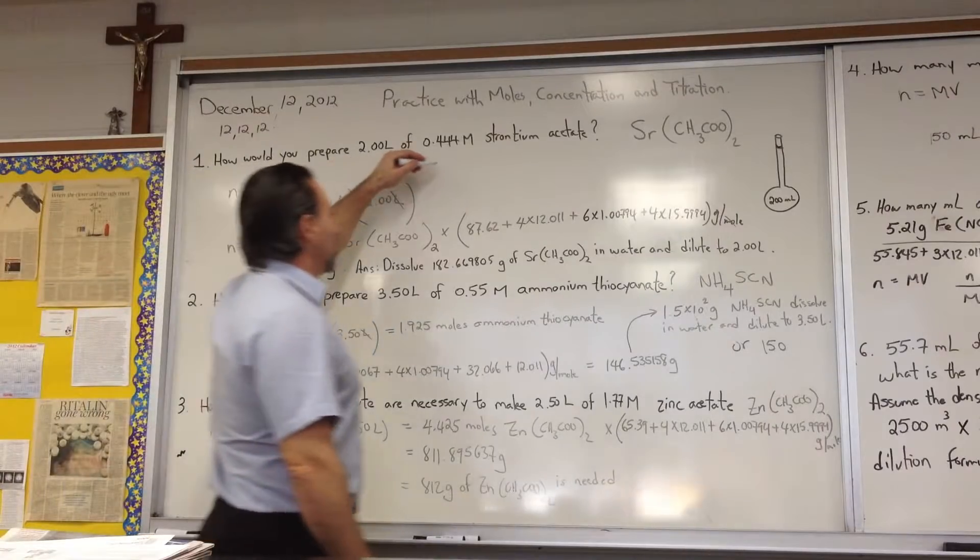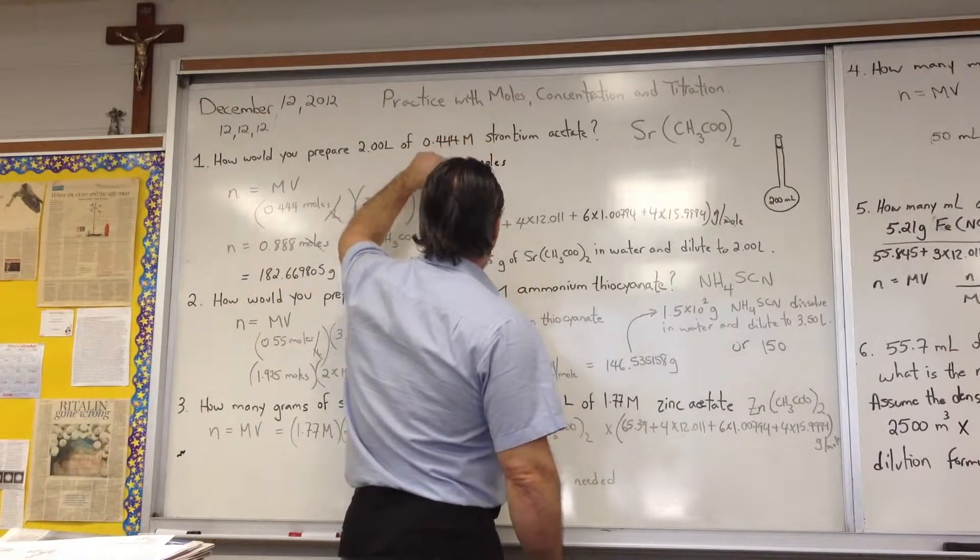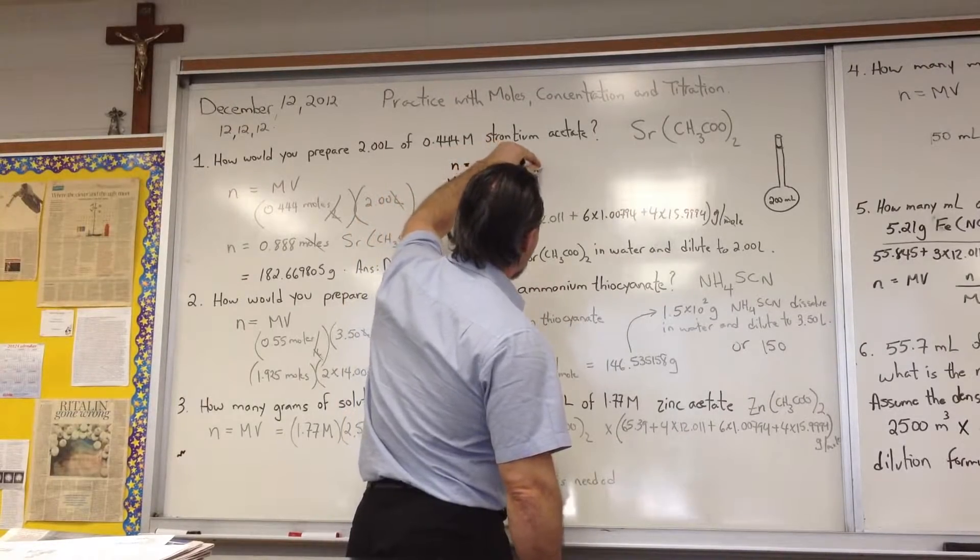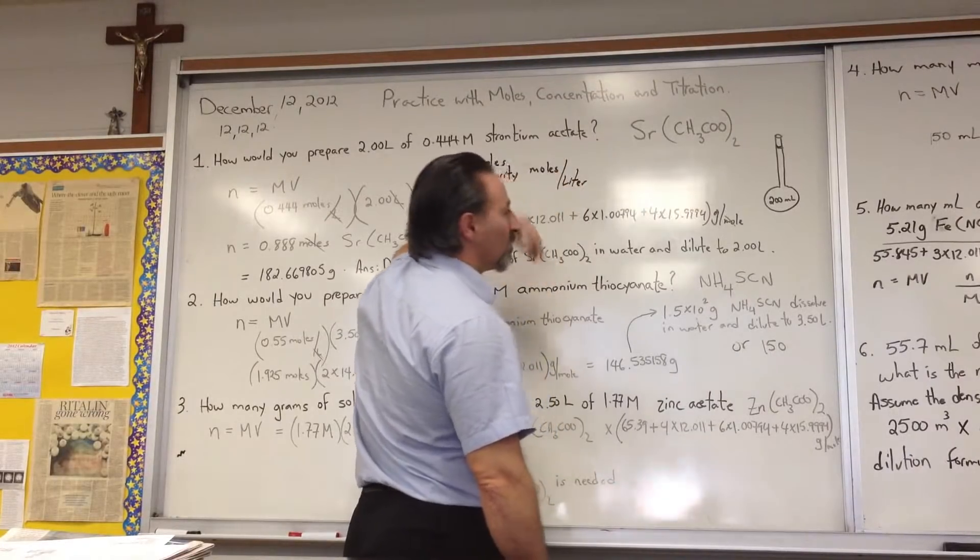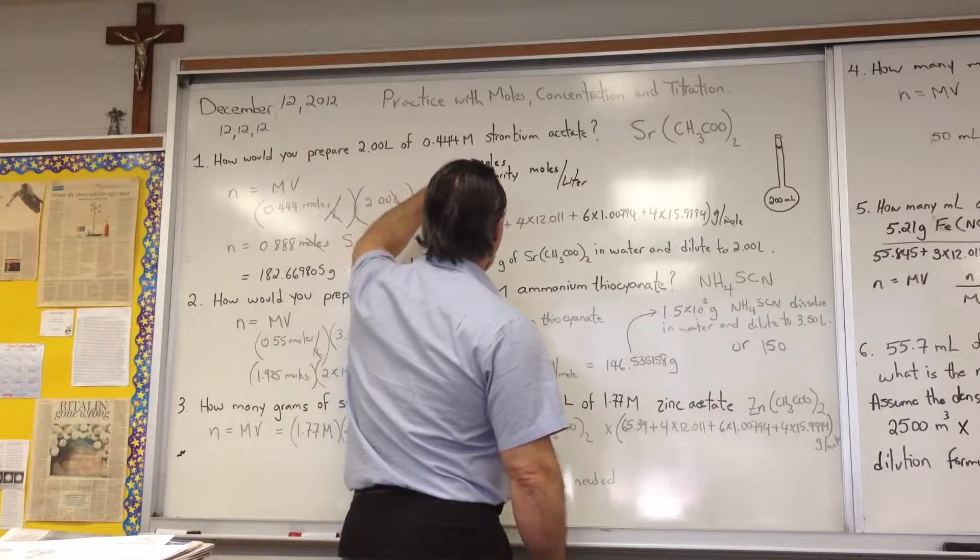Where n equals the number of moles, m is equal to the molarity expressed in units of moles per liter, moles of solute per liter of solution, and v is the volume in liters.